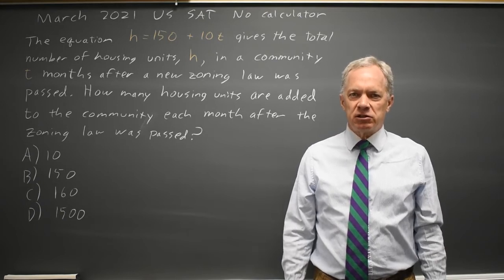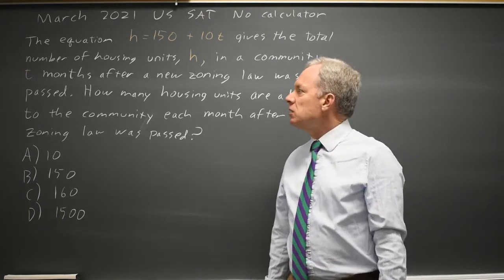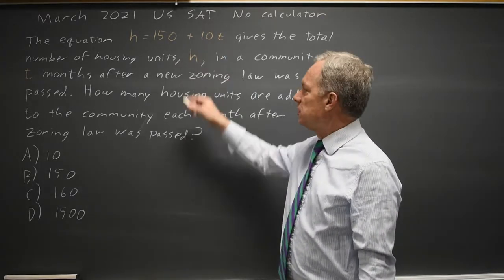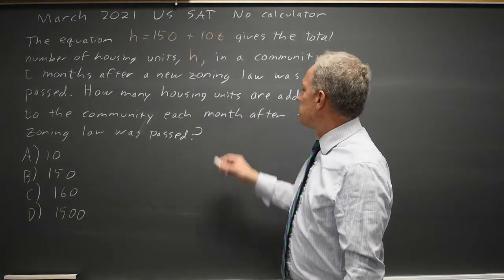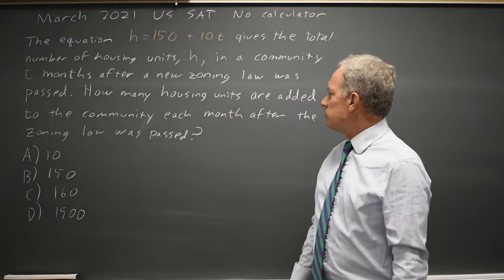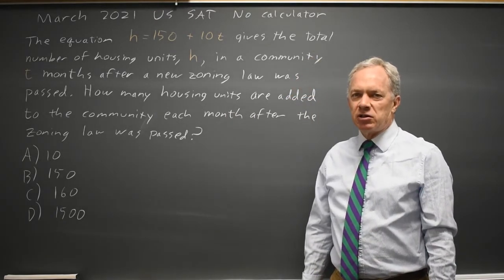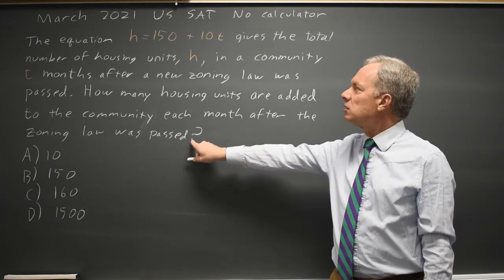College Board is asking us to interpret a linear equation, in particular for h equals 150 plus 10t. They're asking how many housing units are added to the community each month after a zoning law is passed, which is the time period in which this applies.